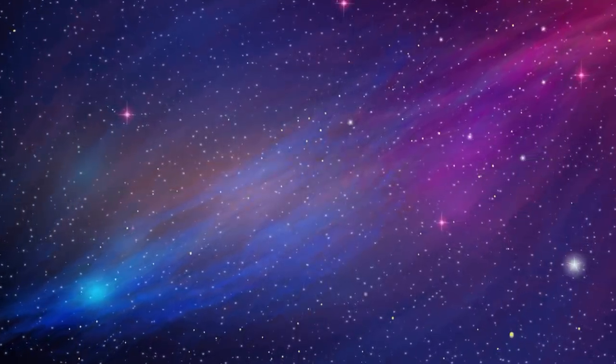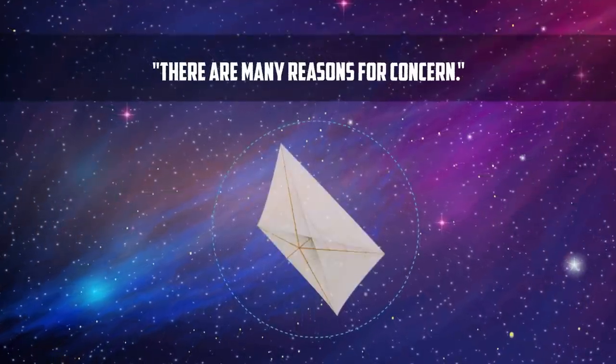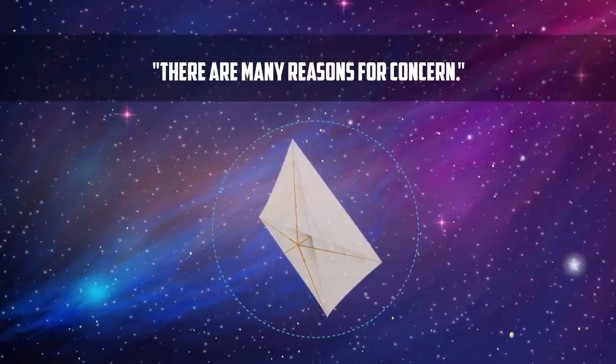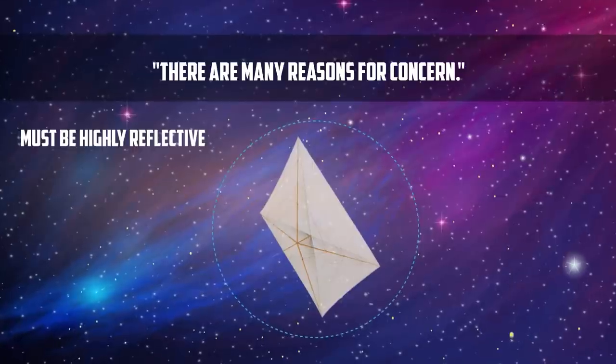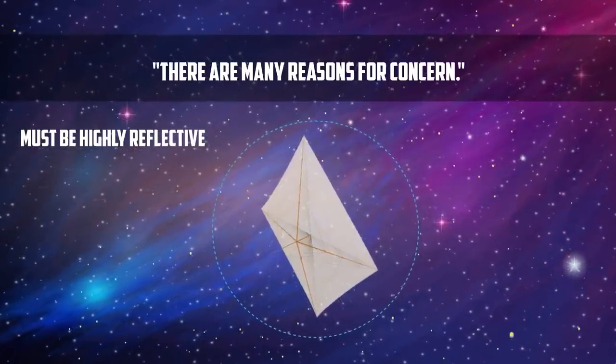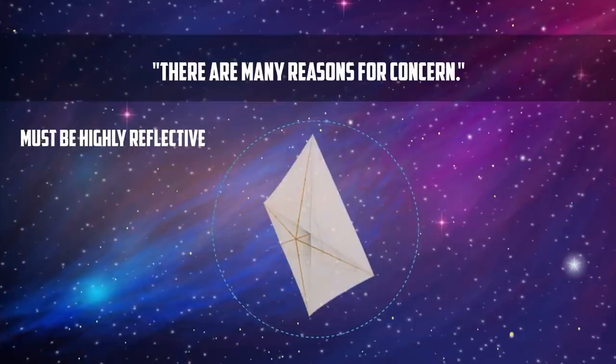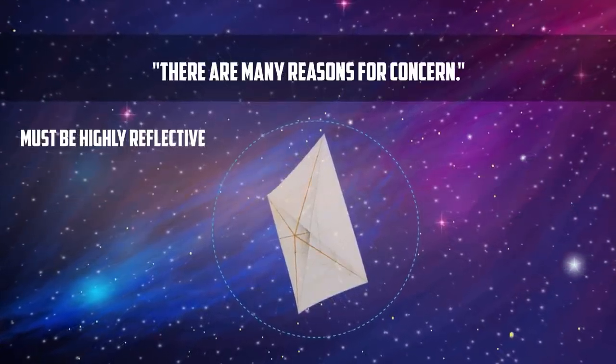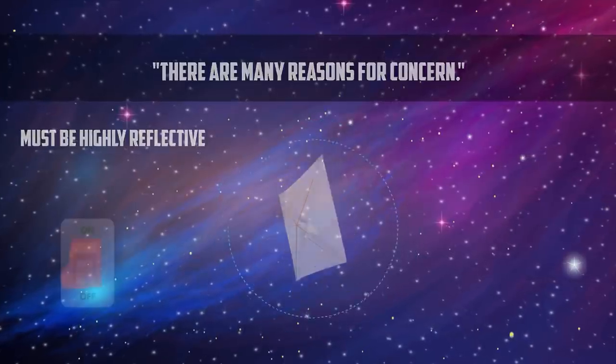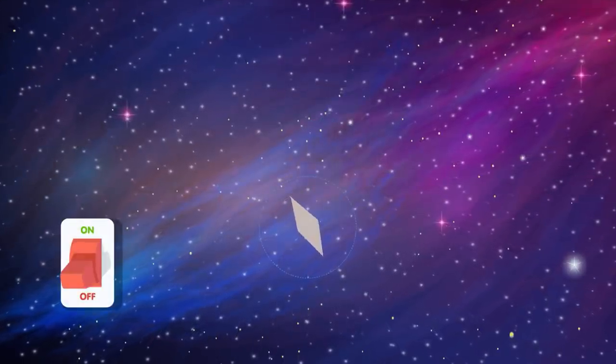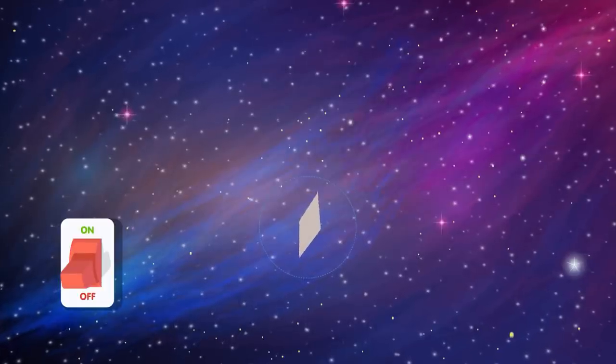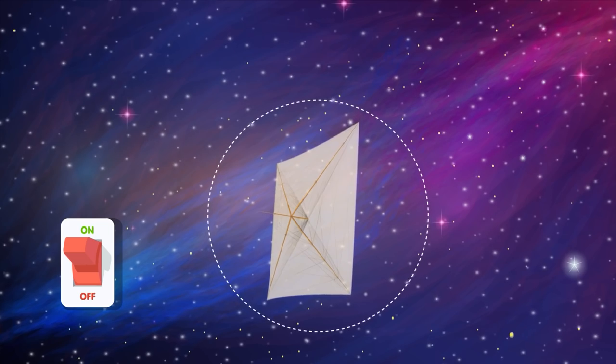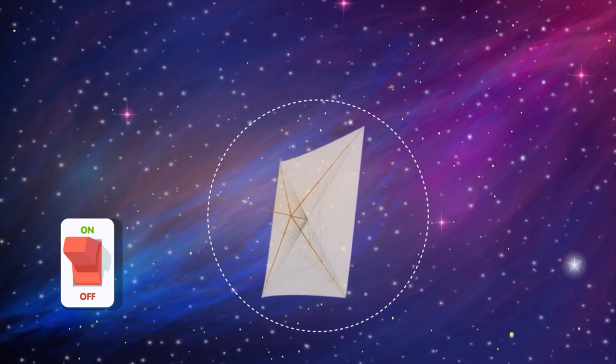But as the Jewish saying goes, there are many reasons for concern. First, as in Project Starshot, the sails must be highly reflective so as not to absorb too much heat and burn up. Second, once the sails are placed in orbit around the massive star, they will be pushed away by bright starlight or mass loss prior to the explosion. To avoid this danger, one could deploy the sails in a folded configuration and equip them with a switch that would open them up like umbrellas as soon as the explosion flash begins to rise.